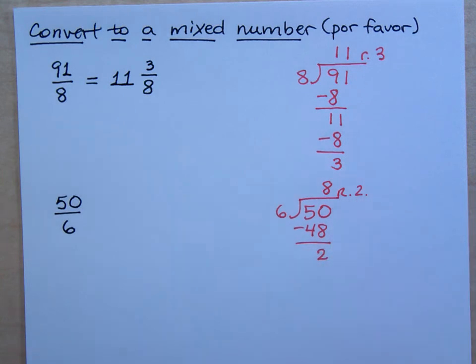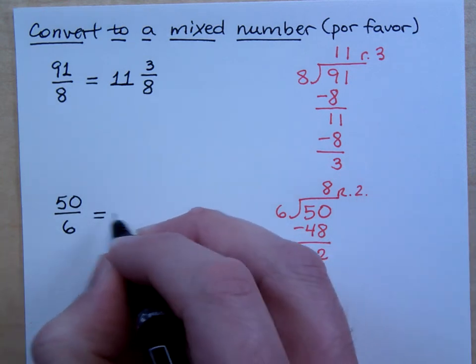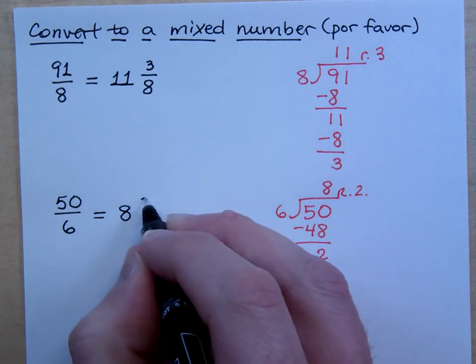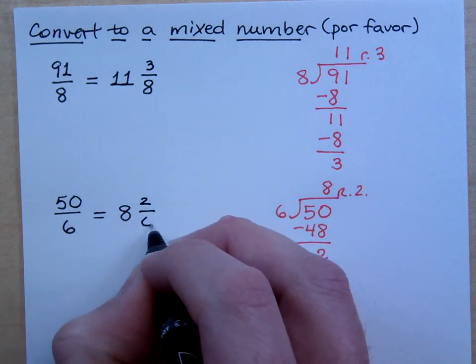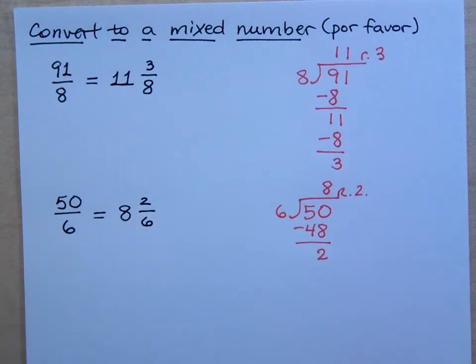Well, that's awesome. So 50 over 6 gives me 8 whole times with 2 over 6. Do you all agree?